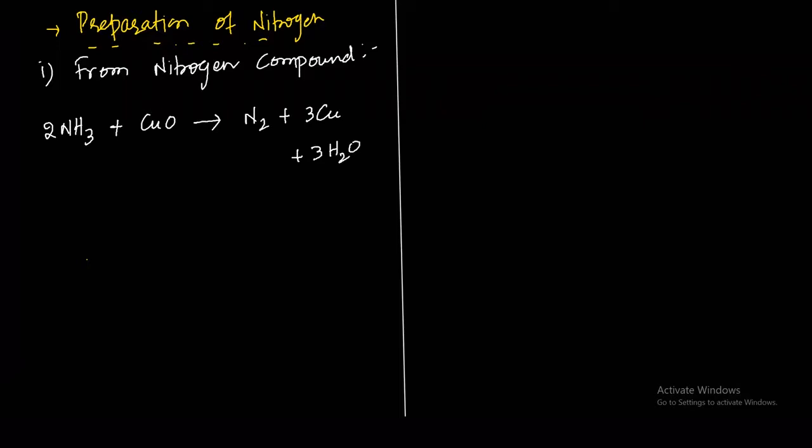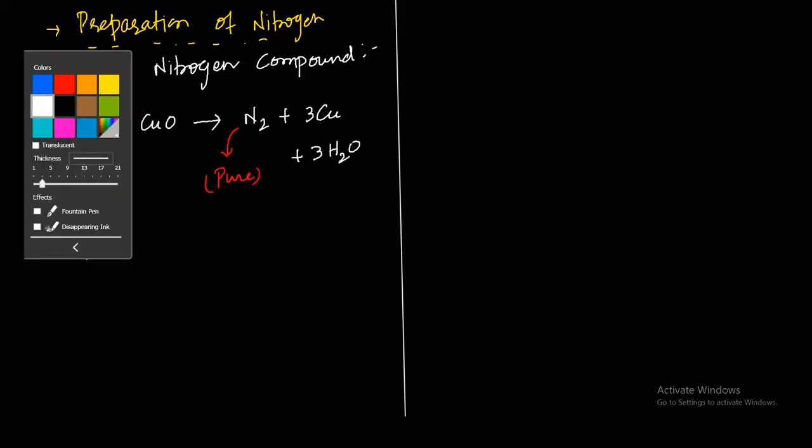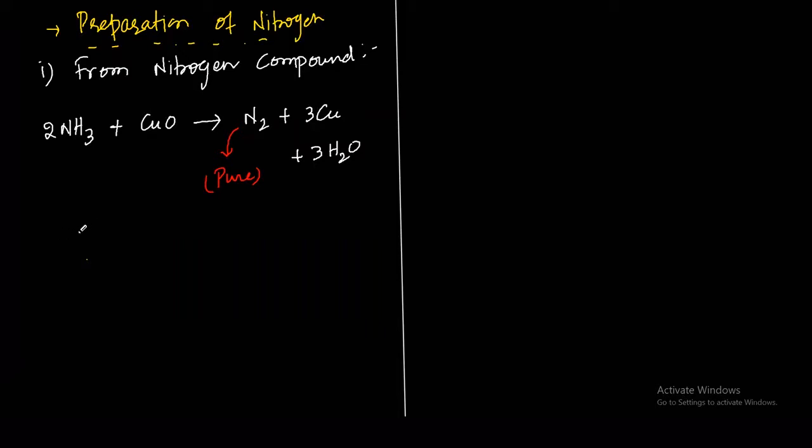You can heat ammonium nitrite to get nitrogen. The reaction: NH4Cl plus NaNO2 forms ammonium nitrite (NH4NO2) plus NaCl. When you heat this ammonium nitrite, you get N2 plus 2H2O. This is the second method using ammonium compounds.